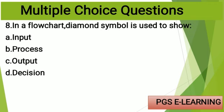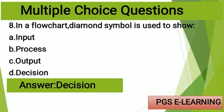MCQ number eight: in a flowchart, diamond symbol is used to show: Option A: input, Option B: process, Option C: output, Option D: decision. The correct answer is decision.